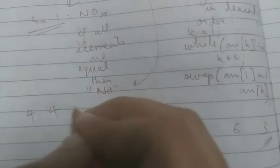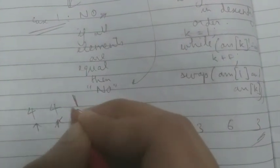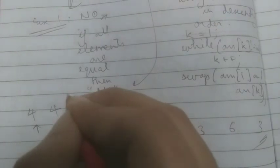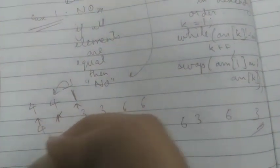For one four four: sorted descending becomes four four one. arr[1] equals arr[0] so we increment k. arr[k] is one which is not equal to four, so we swap arr[1] and arr[k], giving four one four — a valid arrangement.